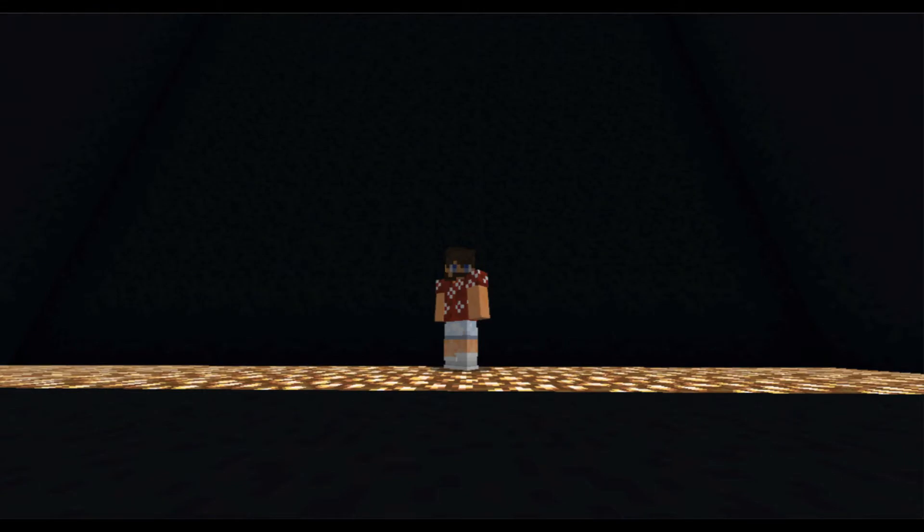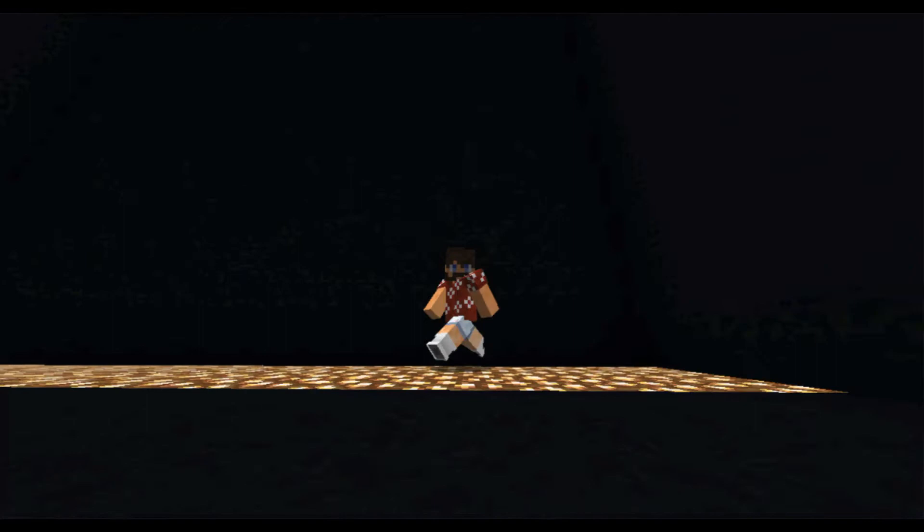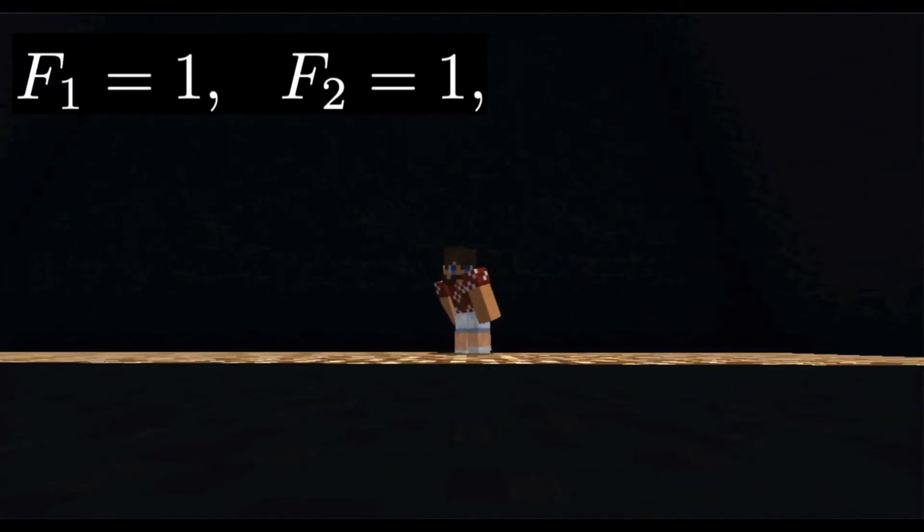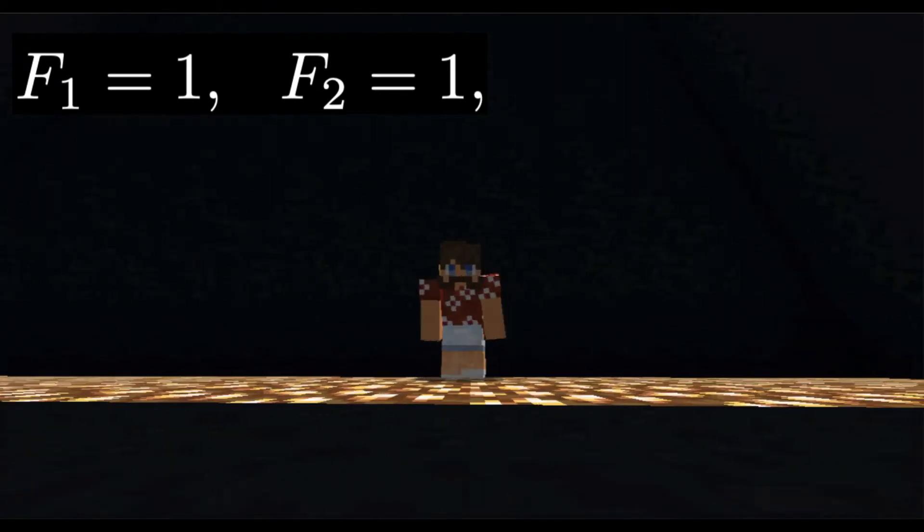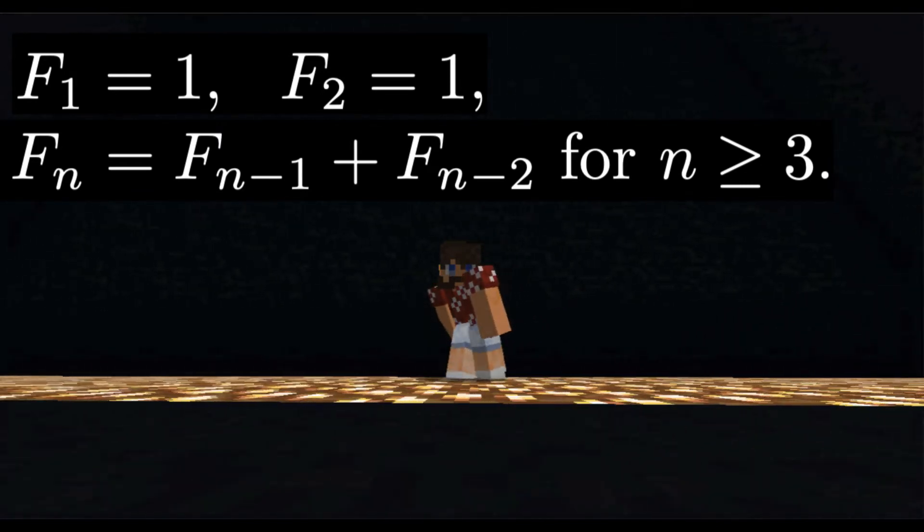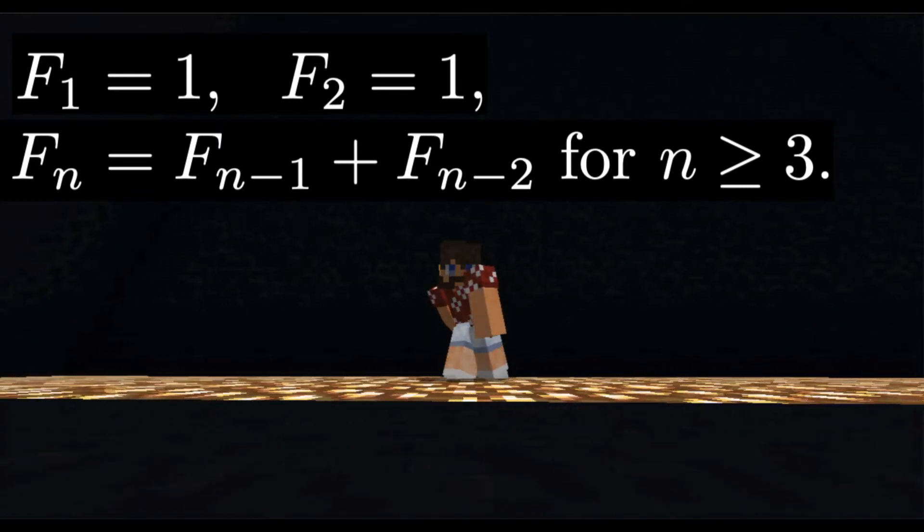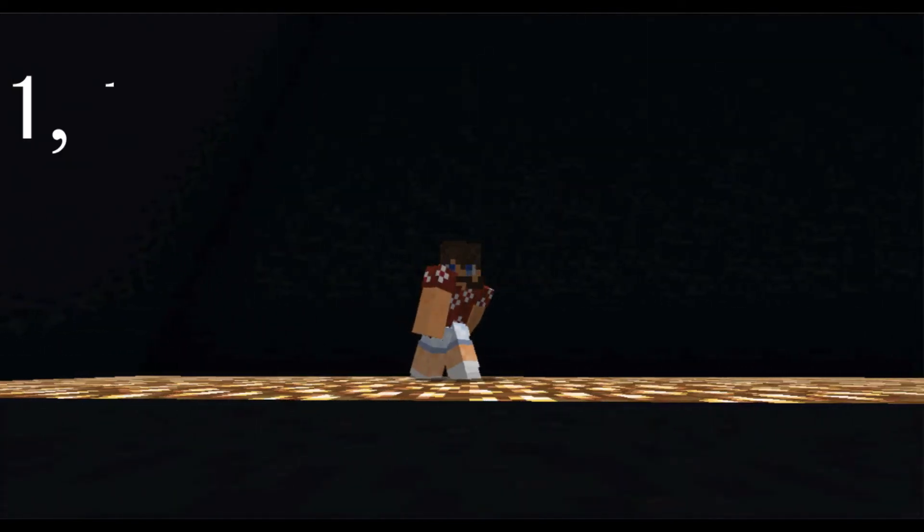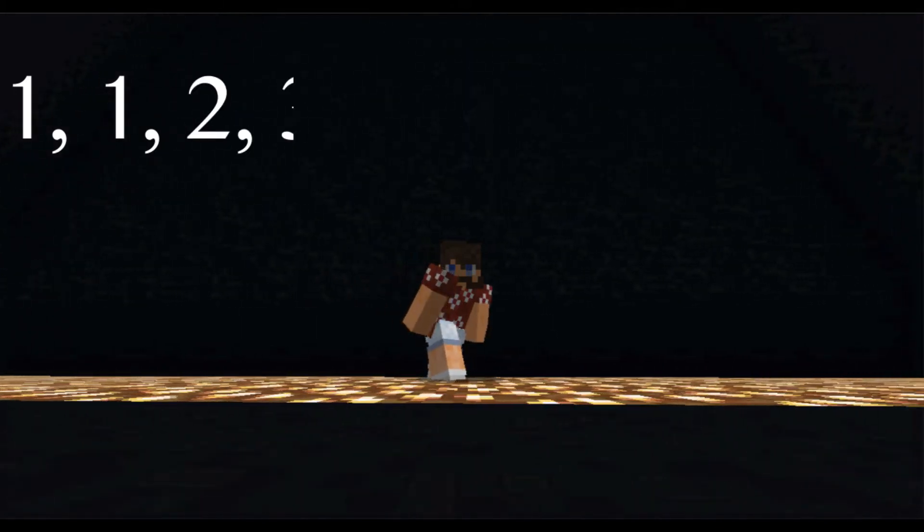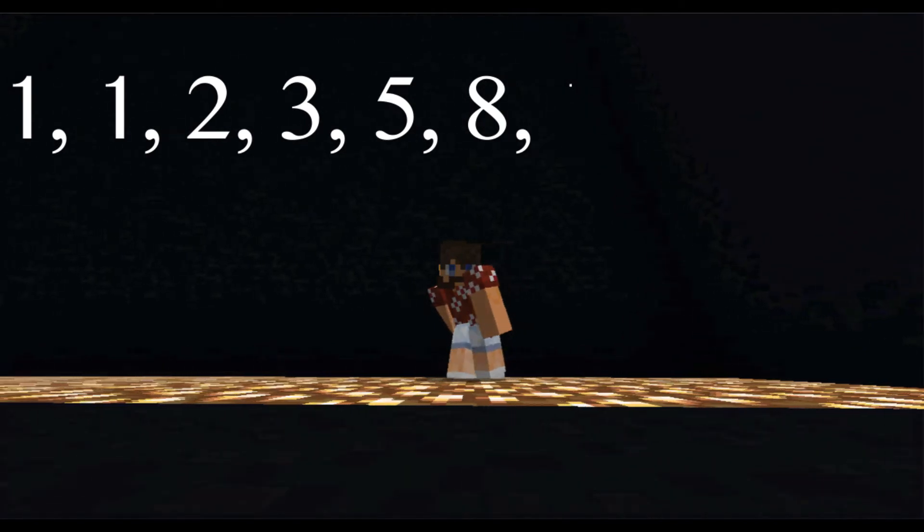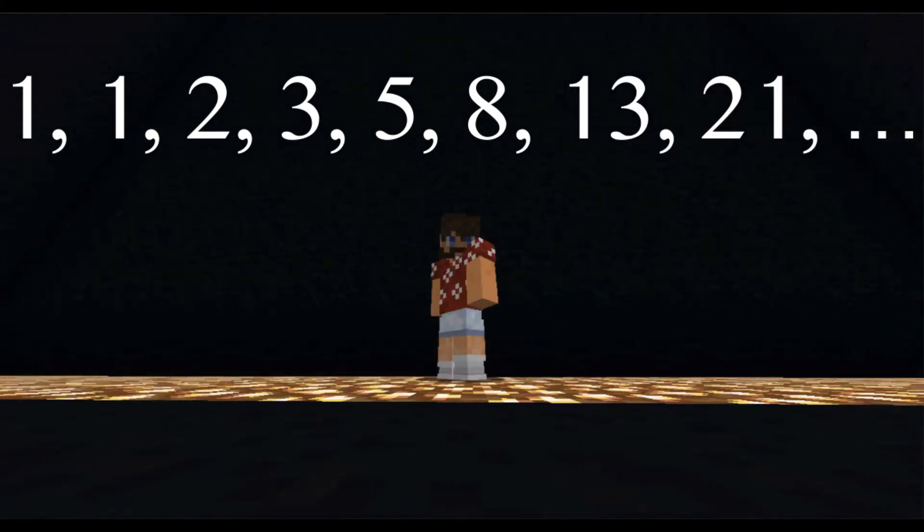The Fibonacci sequence is a sequence of numbers defined recursively by F1 equals one, F2 equals one, and for n greater than or equal to three, Fn is equal to Fn minus one plus Fn minus two. The first few terms of the sequence are one, one, two, three, five, eight, thirteen, twenty-one, and it goes on forever.